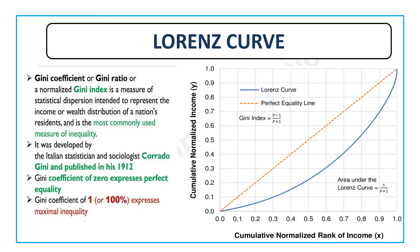A Gini coefficient of 1 expresses maximum inequality — the highest inequality exists with no equality at all. A Gini coefficient of 0 would mean perfect equality.